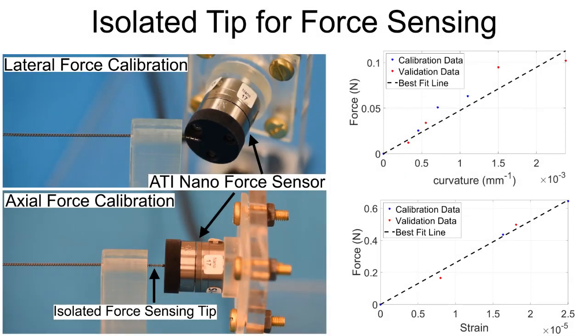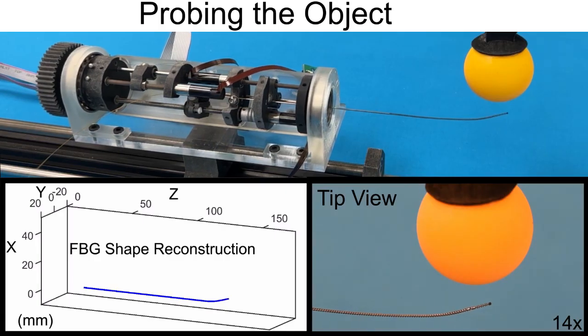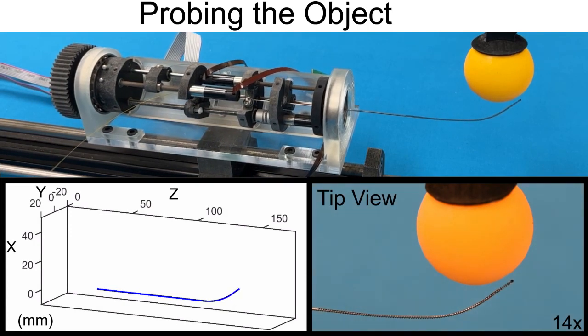A compliant tip has been cut into the outer tube to facilitate force sensing. The FBG sensors along the body can reconstruct the shape of the guidewire and detect the magnitude and direction of force at the guidewire tip.